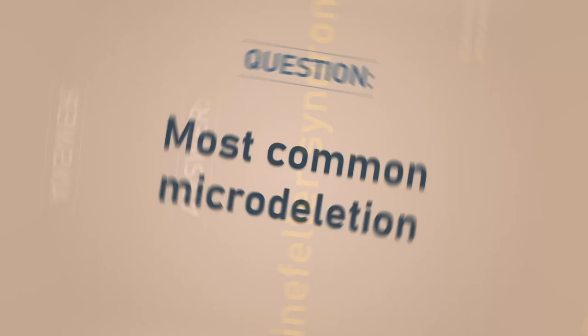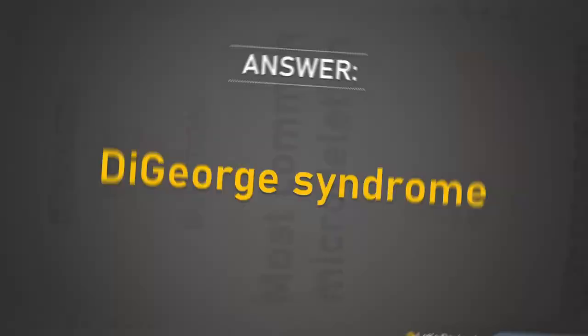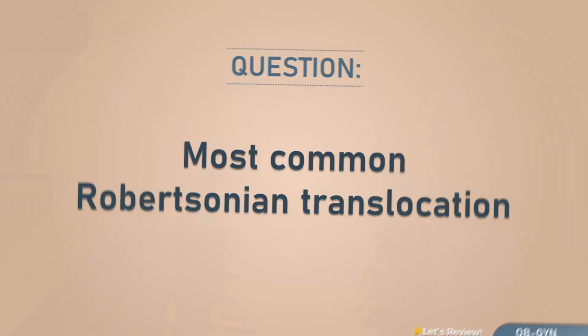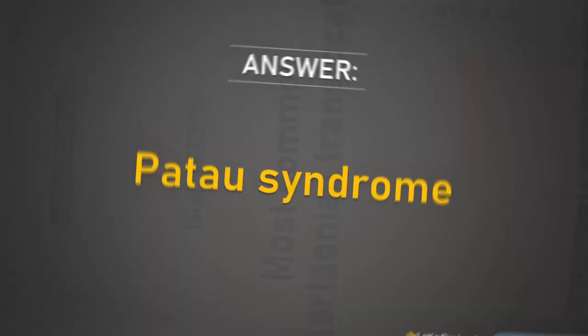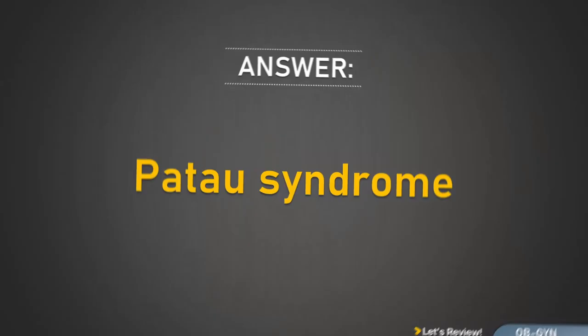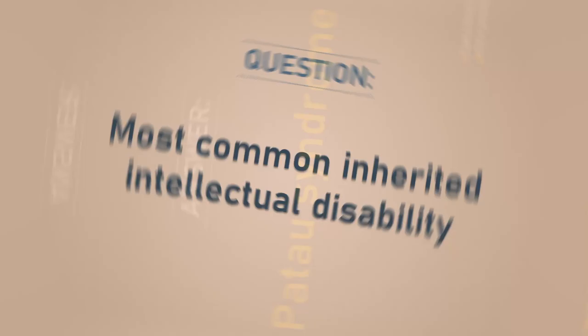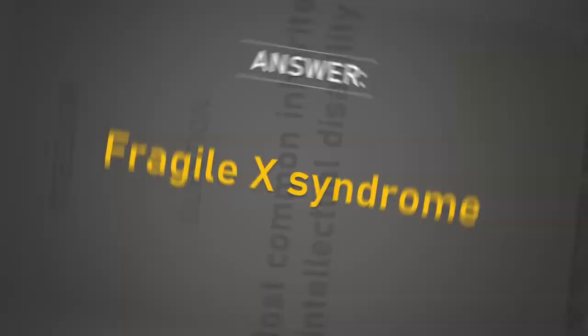Most common microdeletion: DiGeorge syndrome. Most common Robertsonian translocation: Patau syndrome. Most common inherited intellectual disability: Patau syndrome.